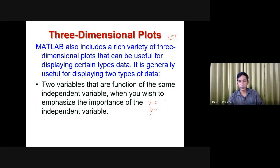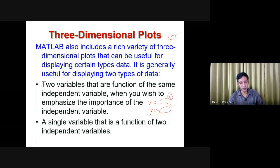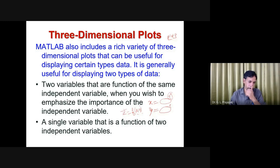X and Y can each be functions of some independent variable — for example, X equals some expression containing the independent variable t, and Y also contains t. This is the dependent variable; its value depends on t, giving you X and Y. Another case is a single variable z as a function of two independent variables, like z = f(x, y), where x and y are independent. You can construct a three-dimensional graph for both cases.